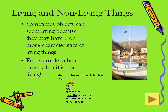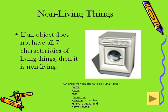Sometimes objects can seem living because they may have one or more characteristics of living things. For example, a boat moves, but it is not living. If an object does not have all seven characteristics of living things, then it is non-living.